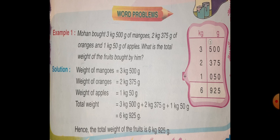Let's consider Example 1. Mohan bought 3 kg 500 g of mangoes, 2 kg 375 g of oranges and 1 kg 50 g of apples. What is the total weight of fruits by him?